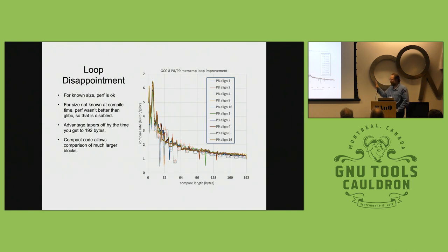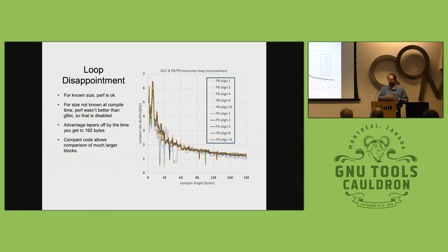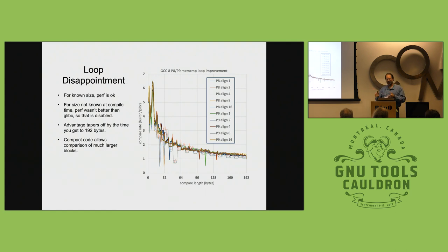I went to the effort of making the loop code handle the case where the length wasn't a compile-time constant — which seemed fairly obvious since you could compute the loop bounds and clean up. But the performance was not really better than glibc in that case, so that code is still in GCC but disabled. A lot of what's enabled and disabled is just me doing performance tests and figuring out how much code bloat I can justify.